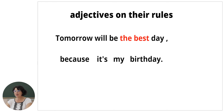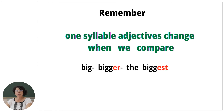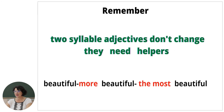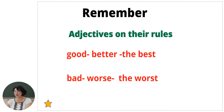So, let's see what we should remember for today. One-syllable adjectives change when we compare: big, bigger, the biggest — you see the difference? Two-syllable adjectives don't change, they need helpers: beautiful, more beautiful, the most beautiful. And remember adjectives with their own rules — there are exceptions: good, better, the best; bad, worse, the worst.